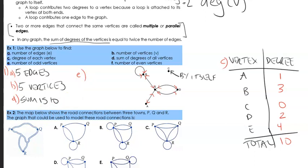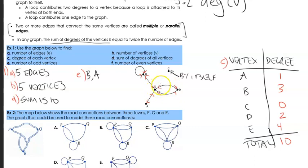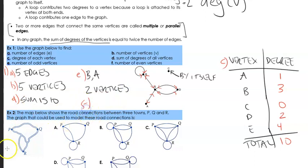For part E, the number of odd vertices — that means vertices with an odd degree. B has degree 3, which is odd. A has degree 1, which is odd. D has degree 2 and E has degree 4, both even. C has degree 0, which is technically even. So there are two odd vertices. For part F, the number of even vertices: A is excluded, so we have E, D, and C — that gives us four even vertices.